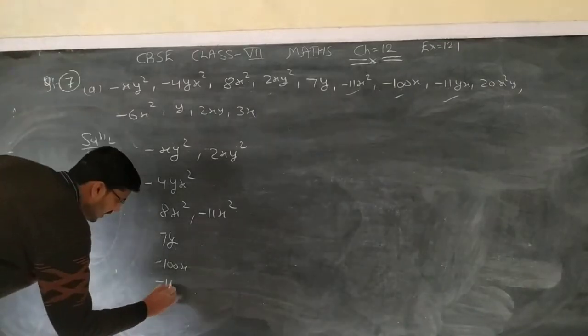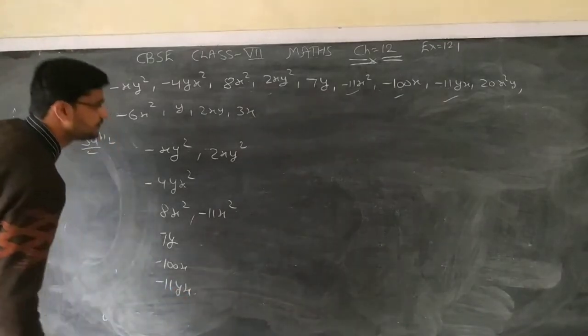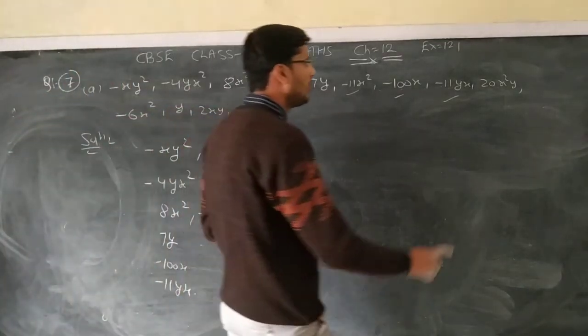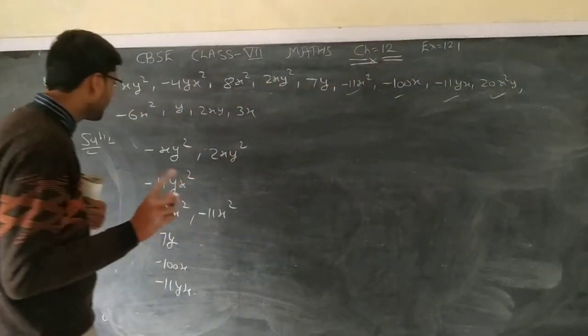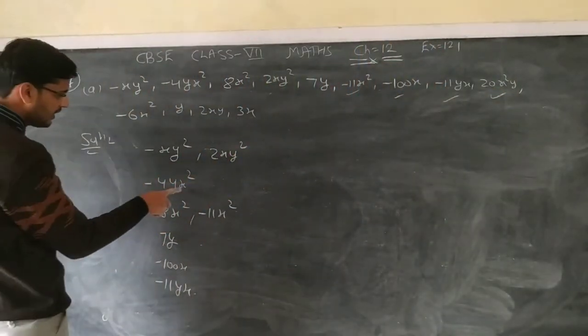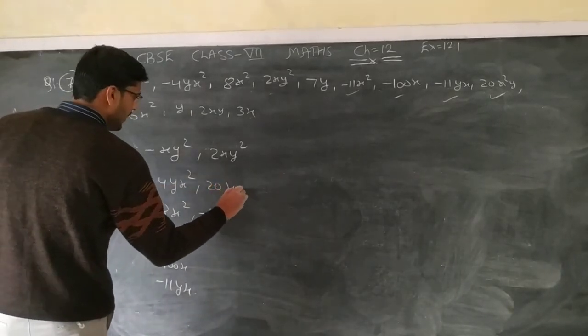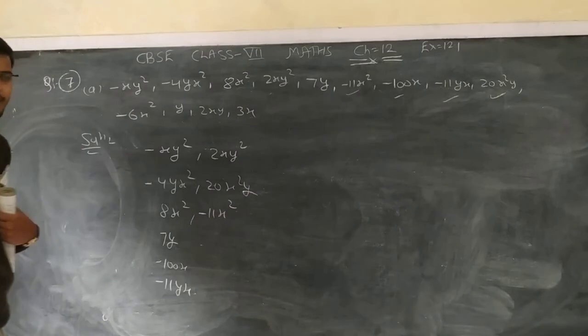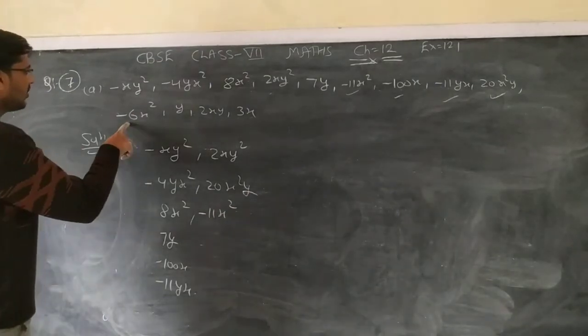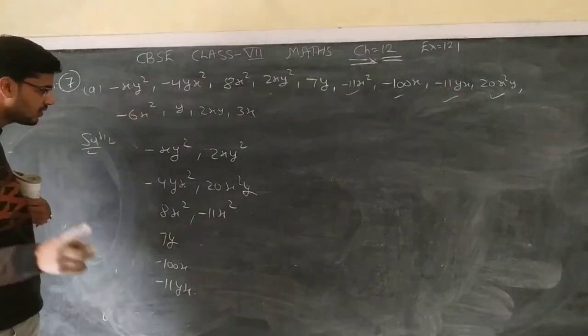Now next one is 20x square y. Well x square y is there, then it is x square y. This is 20x square y. Now next one is negative 6x square, so it is minus 6x square.